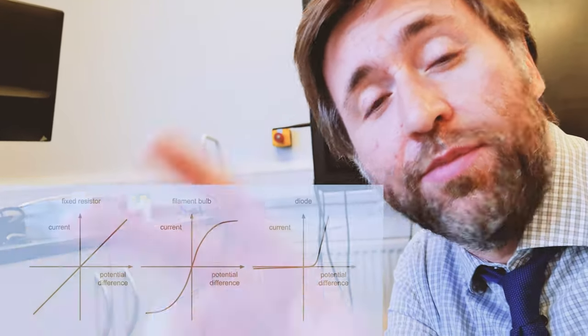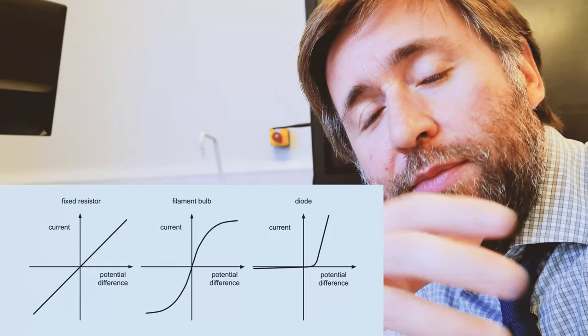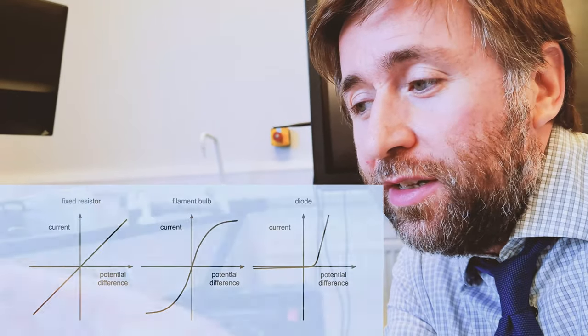So that's the practical. You need to be able to describe that method and compare the different graphs. The key conclusions are: for a fixed resistor, the resistance is the same throughout the range of potential differences, and you get a straight line graph through the origin — potential difference is proportional to current. But for a filament bulb, which is a non-ohmic resistor, the resistance actually changes. You get a higher resistance when you have a higher current flowing, because the metal in the filament heats up, the ions vibrate more, and they get in the way of the charge carriers.